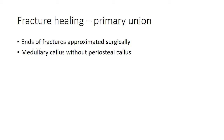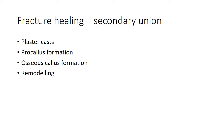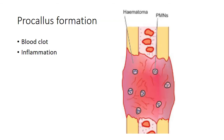Secondary union is when plaster casts are applied. Here the process is arbitrarily divided into three stages: the stage of procallus formation, the stage of osseous callus formation, and the stage of remodeling. We will discuss these stages in a little more detail.